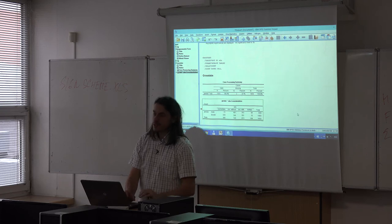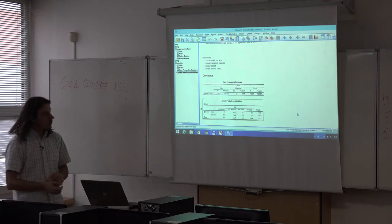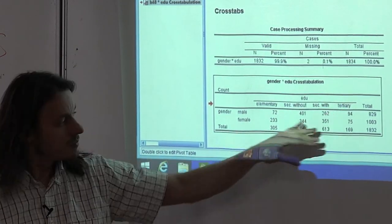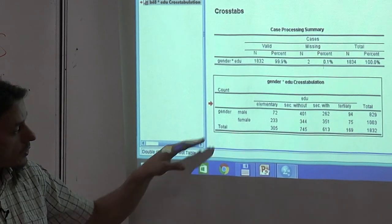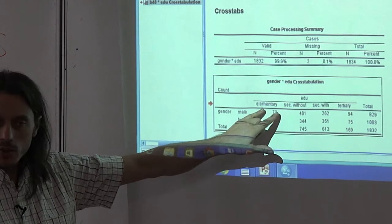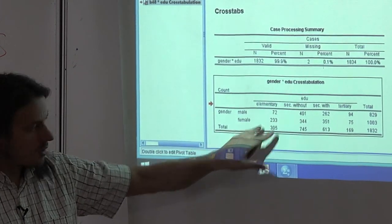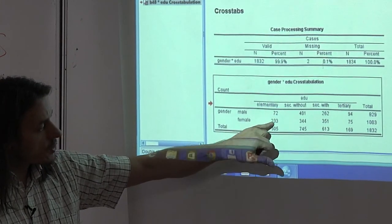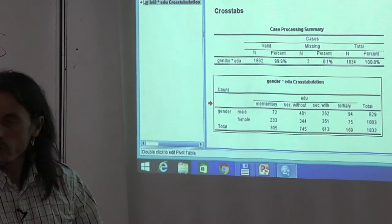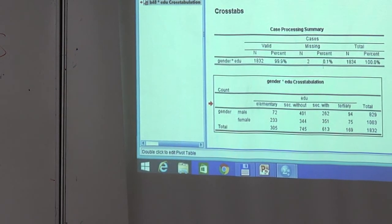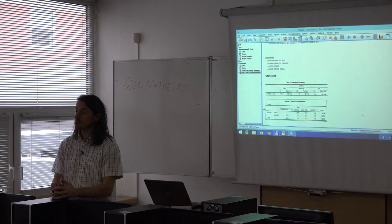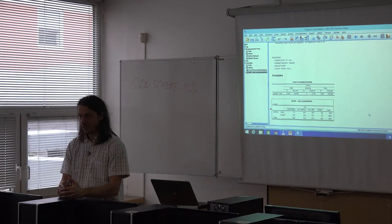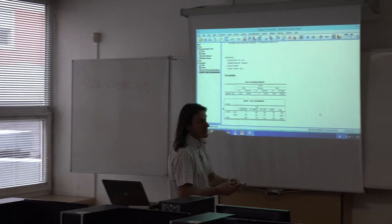The output shows the contingency table with observed counts. For example, we can see 72 men with elementary education and 233 women. But is there any relationship between these two variables? It is quite hard to recognize from these absolute numbers alone — let's request percentages instead.